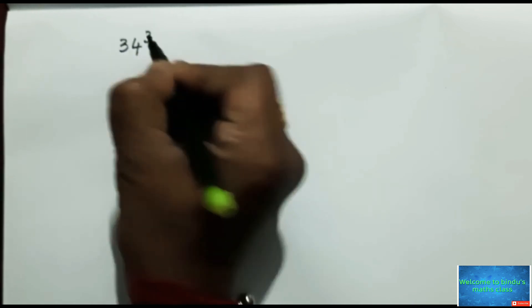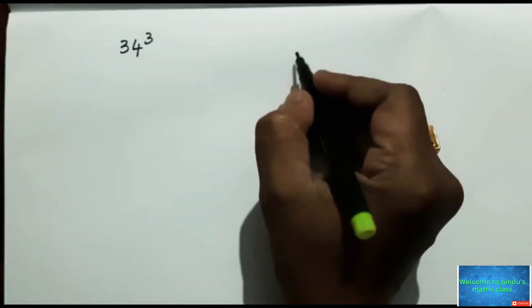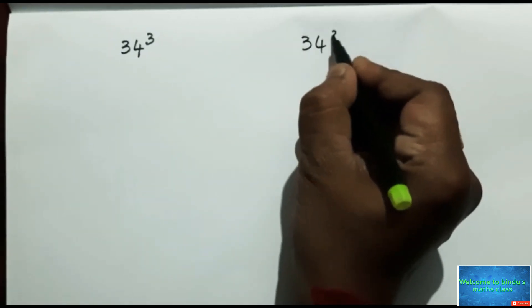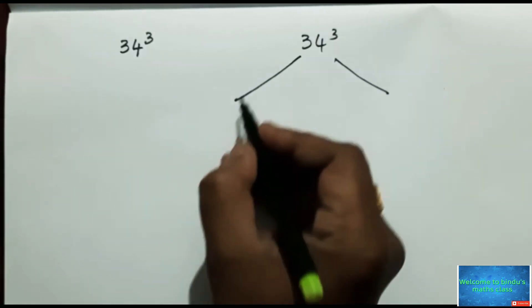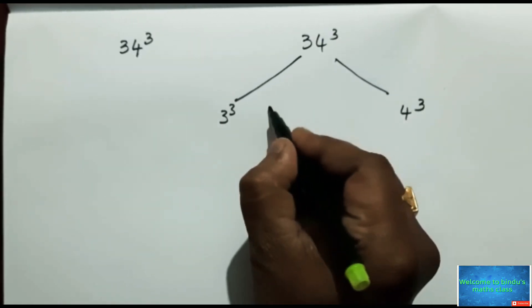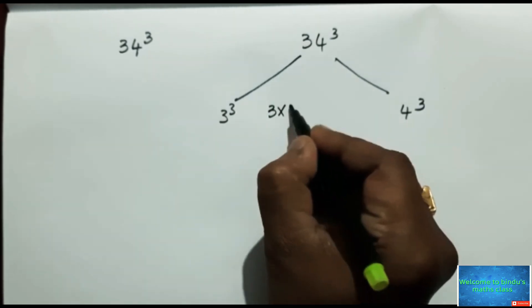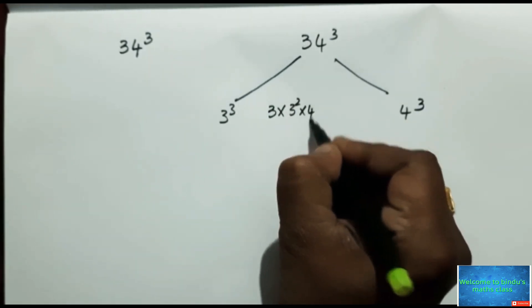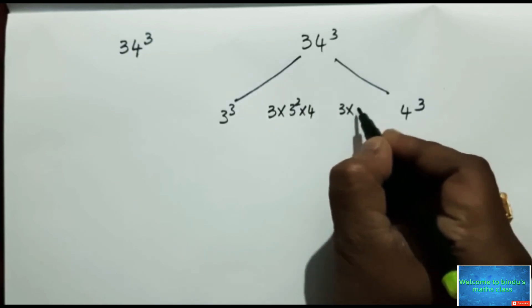I am taking 34 cube. Please write down like this 34 cube. Here 3 cube and here 4 cube, 3 into 3 square into 4, 3 into 3 into 4 square.